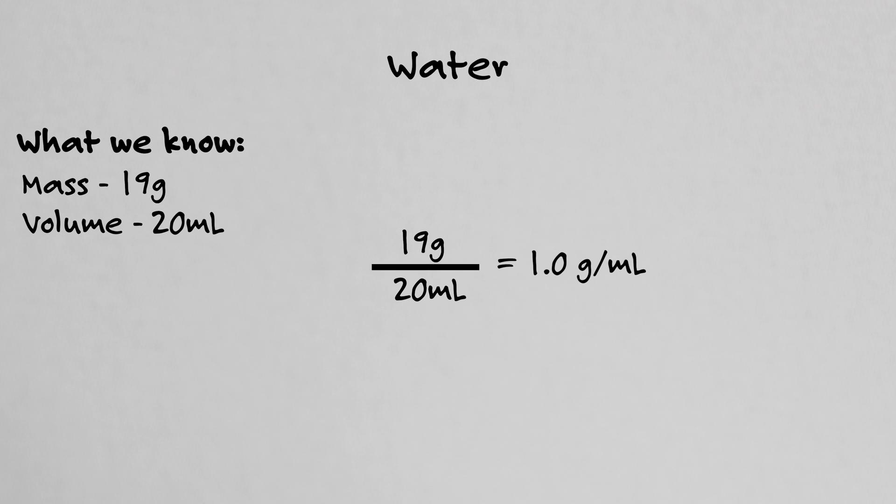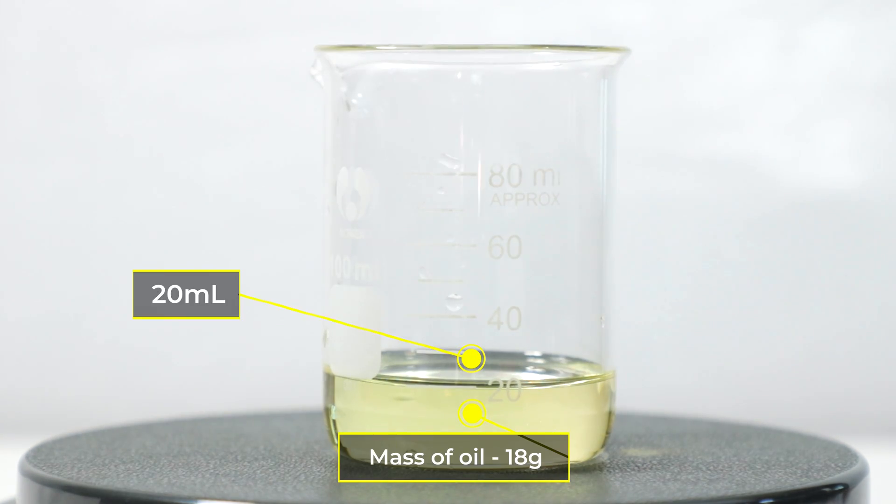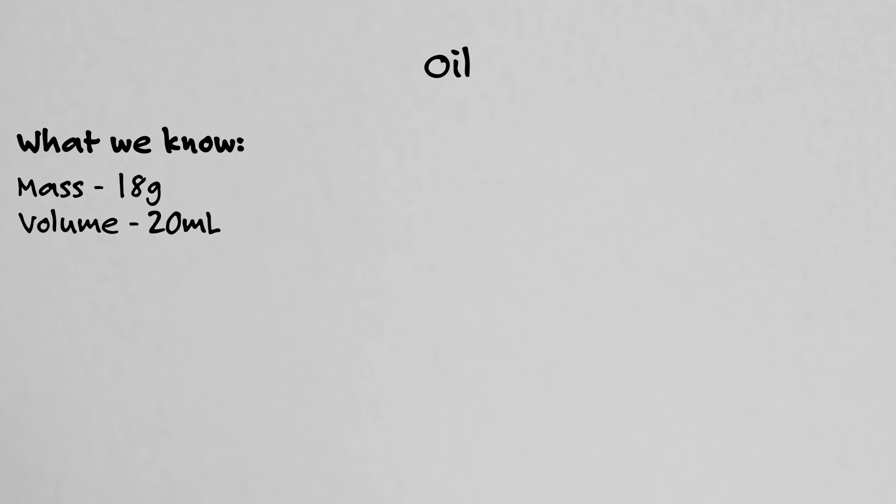As a side note the density of water varies slightly with temperature. I get this figure as my scale is not precise to the ten thousandths place. Now let's do one more example. Let's do peanut oil. We measure the mass 18 grams and we get a volume of 20 milliliters. Divide the mass of 18 grams by 20 milliliters and we get a density of 0.9 grams per milliliter.